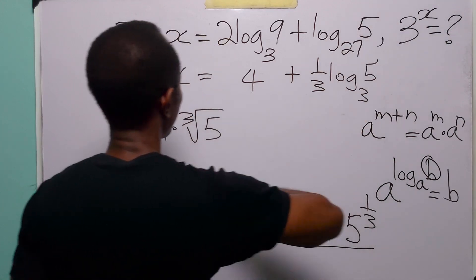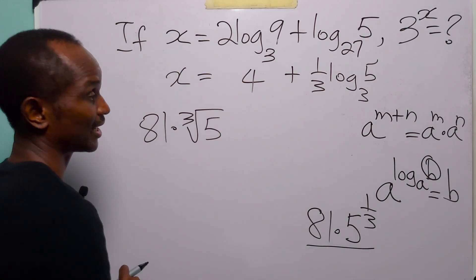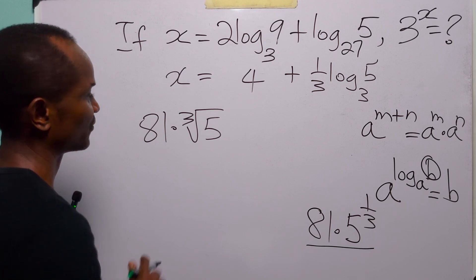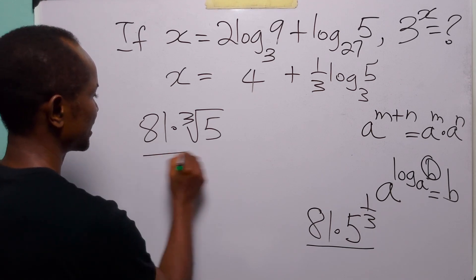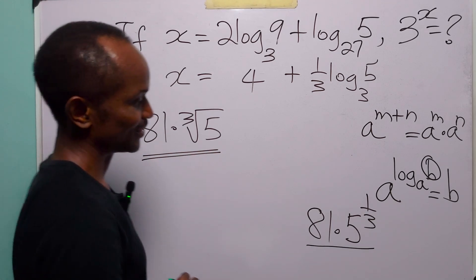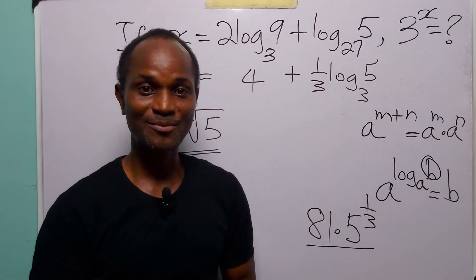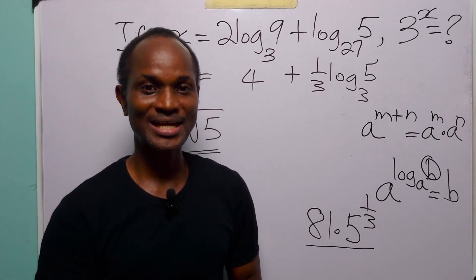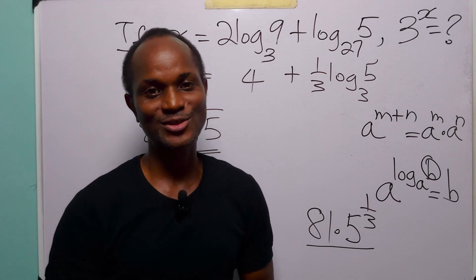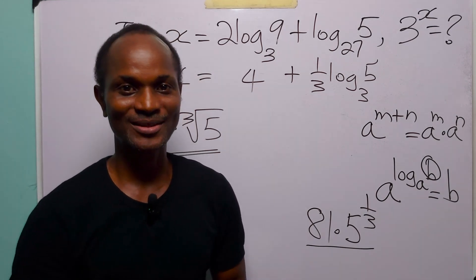So we have that the value of 3 to the power x, when x equals 2 times log to base 3 of 9 plus log to base 27 of 5, is equal to 81 times the cube root of 5. With that we come to the end of this tutorial. I hope you learned something new. If you enjoy such content, please subscribe to the channel and leave a like to support the channel. Thanks for watching and see you in the next one.